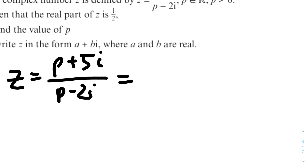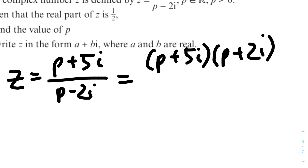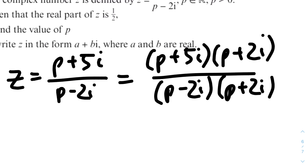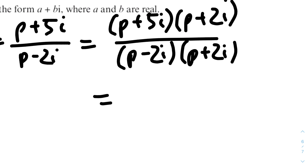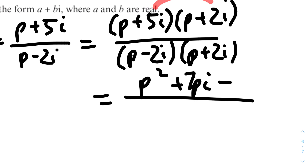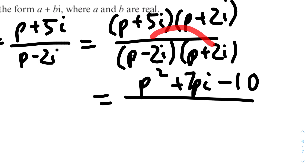Expanding the numerator: p × p = p², p × 2i + 5i × p = 7pi, and 5i × 2i = -10. So the numerator is p² - 10 + 7pi. The denominator using difference of two squares is p² + 4. So z = (p² - 10) / (p² + 4) + 7p / (p² + 4) · i.